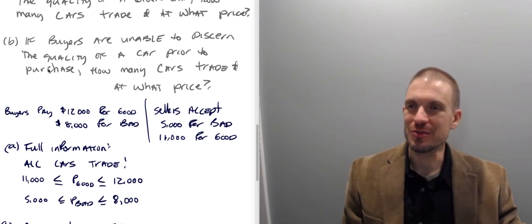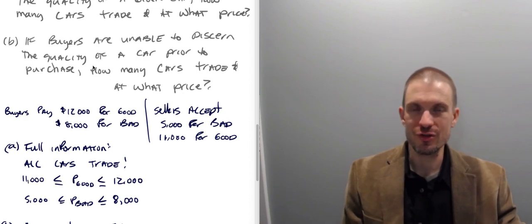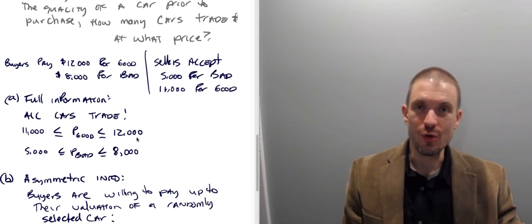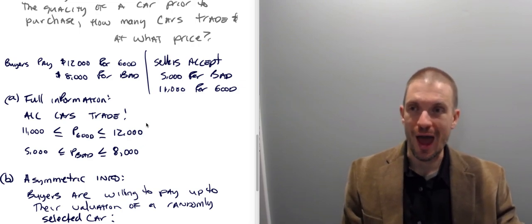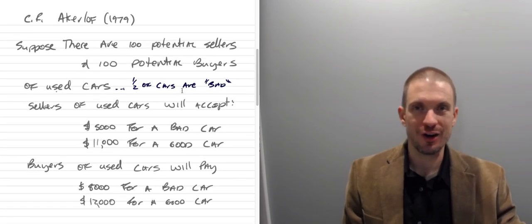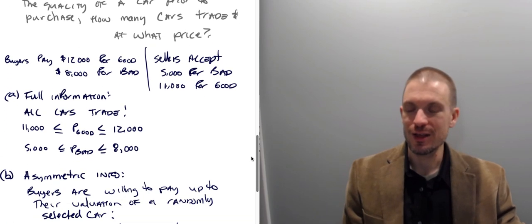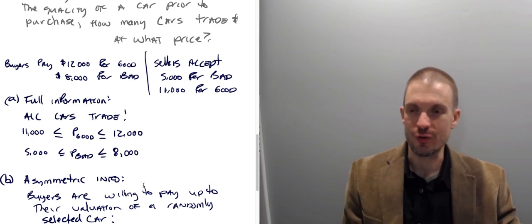Well, now let's think about the asymmetric information situation. So suppose now buyers can't discern the quality of a car. They can't tell good and bad cars apart. Now buyers are willing to pay only up to their valuation of a randomly selected car. Because if they can't tell the difference between good and bad cars and they know half of them are good and half are bad. Remember I said I had this assumption, half the cars are bad. So they can't tell the cars apart, but they know half are good and half are bad. Then consumers are only going to be willing to pay as much as they would for a randomly selected car.